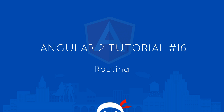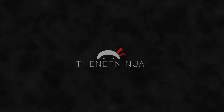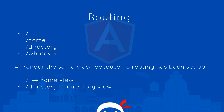Welcome to your 16th Angular 2 tutorial. In this video we're going to talk about routing. Currently if we type in a different URL into our address bar such as forward slash home or forward slash directory, we're always going to get the same view in our browser — the default app.component view with the home component view embedded into it — and that's because no routing has been set up in our application.